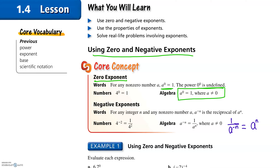For example, four to the zero power is one. Then for negative exponents, if we have an integer n — it can be positive, it can be negative, it can be zero — and we have a non-zero number a, then a to the negative n is the reciprocal of a to the n.